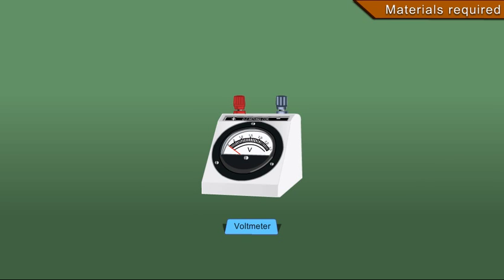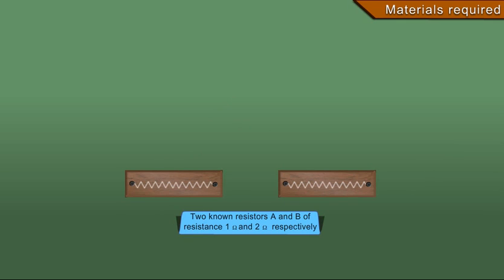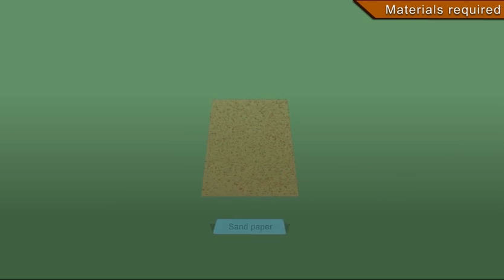Voltmeter; rheostat 10 ohm; two known resistors A and B of resistance 1 ohm and 2 ohm respectively; sandpaper.